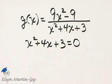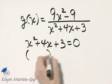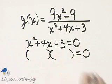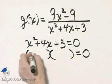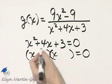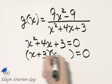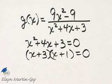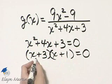Now notice we have a quadratic equation, so let's try and factor the left side. That will be x and x. Factors of 3 whose sum is 4, that would be 3 and 1. And then we set each factor equal to zero.